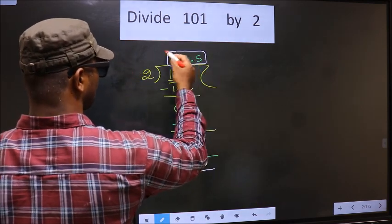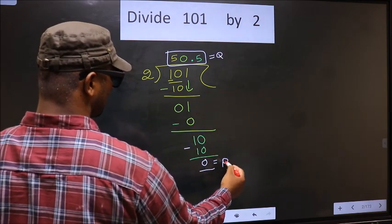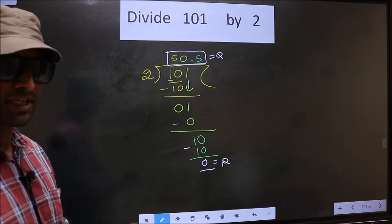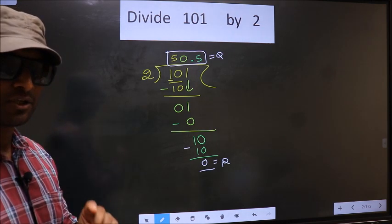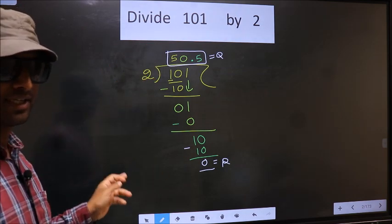So this is our quotient. And this is our remainder. Did you understand where mistake happens? You should not do that mistake. Am I clear?